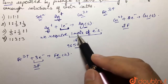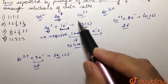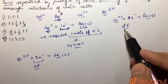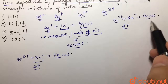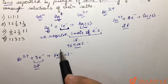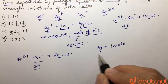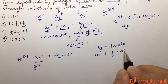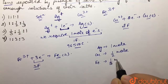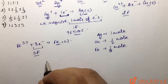Since we are passing the same quantity of electricity through all of these, for example one Faraday: we get one mole of silver. But since copper requires two Faradays, if we pass only one Faraday, only half a mole of copper would be deposited. And for iron, only one-third of a mole would be deposited.